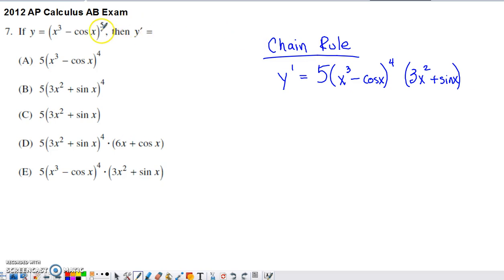So chain rule says take the derivative of that outer function. Well, the derivative of something to the fifth power is 5 something to the fourth power. Chain rule requires us to keep the inner function in that initial expression. And then to finish off our chain rule, we have to multiply by the derivative of the inside function.